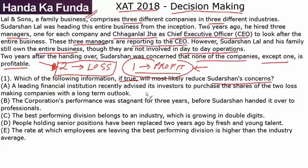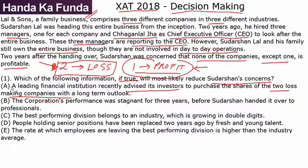Option A: A leading financial institution recently advised its investors to purchase the shares of the two loss-making companies with a long-term outlook. This means a leading financial institution is showing a lot of faith in the loss-making companies. If they are trusting those companies, maybe Sudarshan should also trust them — so this will reduce his fears and concerns. Option A is a very good option.